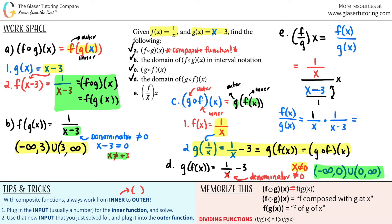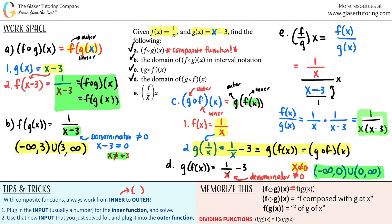Simplifying: 1 times 1 is 1 on top, and x times x minus 3 on the bottom. If you wanted to distribute, that's x squared minus 3x, but it's the same thing. I'll leave it as 1 over x times x minus 3. That is your new function when you divide f by g.